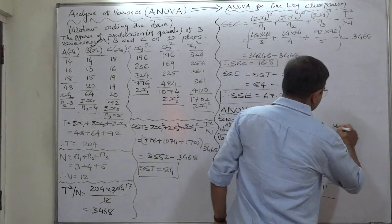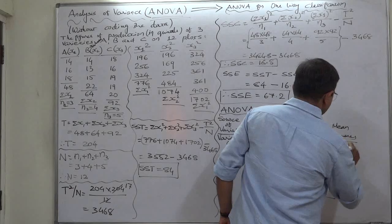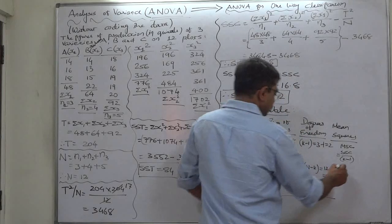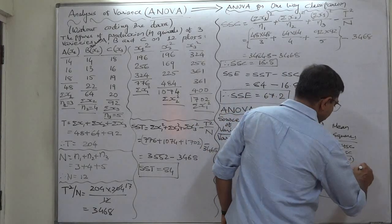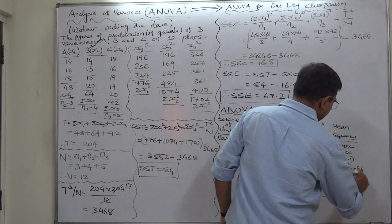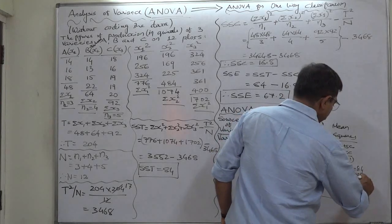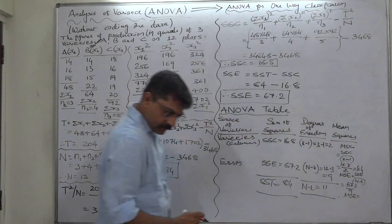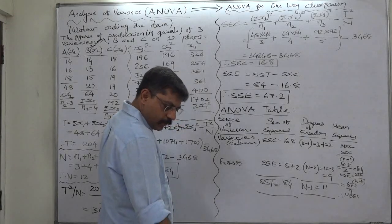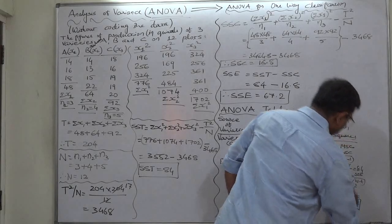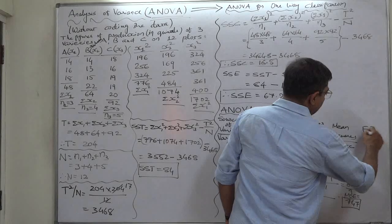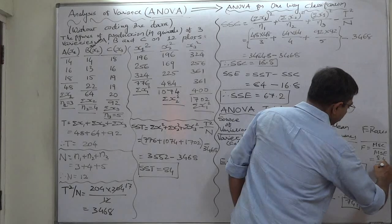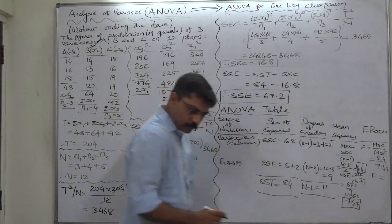Now for mean squares: MSC equals SSC divided by k minus 1, that is 16.8 divided by 2, giving MSC = 8.4. MSE equals SSE divided by n minus k, that is 67.2 divided by 9, giving MSE = 7.47. The F ratio is MSC divided by MSE, which is 8.4 divided by 7.47, so the calculated value of F = 1.12.